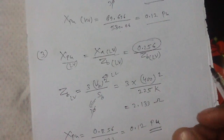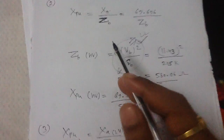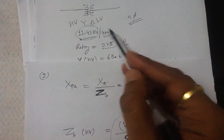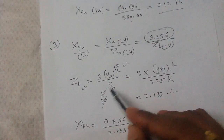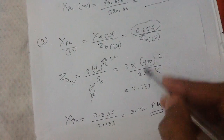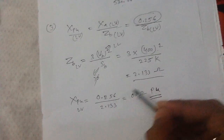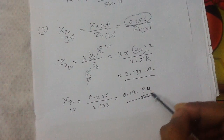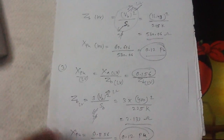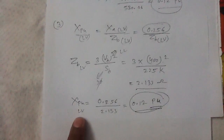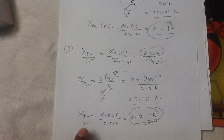The base impedance on the LV side equals 400 volts squared divided by the power rating of 225 kVA, which gives 2.133 ohm. The per unit reactance referred to the LV side equals 0.256 divided by 2.133, giving 0.12 per unit. This is very important: the per unit reactance referred to the HV side and the per unit reactance referred to the LV side are the same for a transformer.